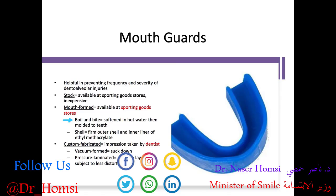You can also get a shell mouth guard with a firm outer shell and a softer inner liner of ethyl methacrylate. The best option is a custom-fit guard made by a dental professional from an impression, vacuum-formed over a cast or pressure-laminated with multiple layers. Custom-fit guards fit the best, but the mouth-formed option is a good step down, and certainly better than a stock mouth guard.